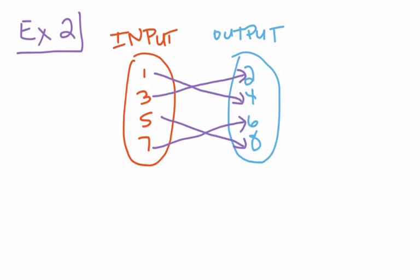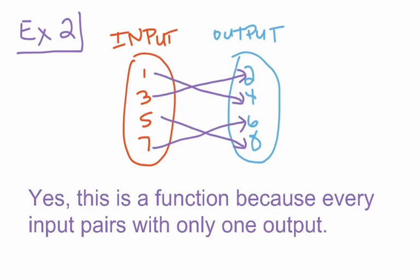For our second example, we have a mapping diagram with input values of 1, 3, 5, and 7, and output values of 2, 4, 6, and 8. If we're asked to determine if this mapping diagram represents a function, the answer is yes. Every single input only has one arrow being drawn from it to an output value. Each input leads to only one output. Yes, it is a function, because every input pairs with only one output.